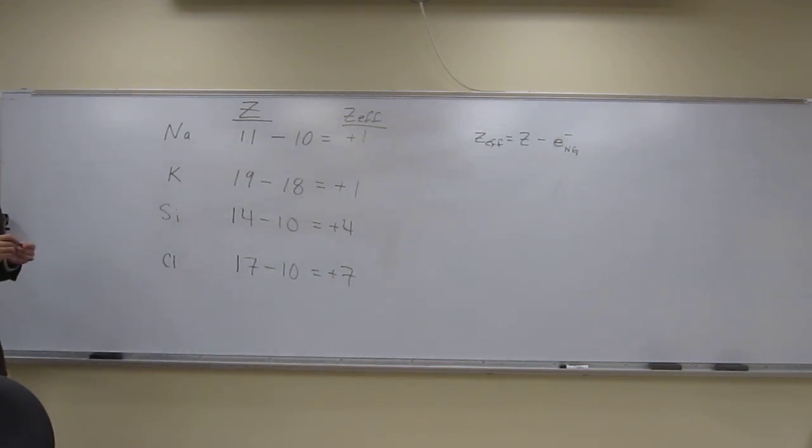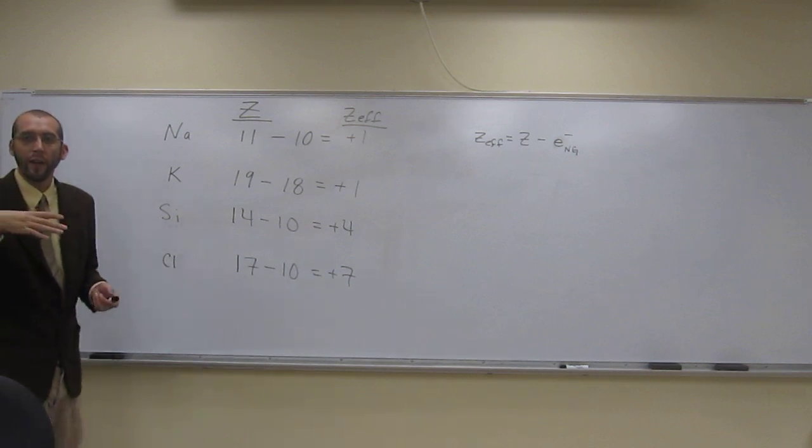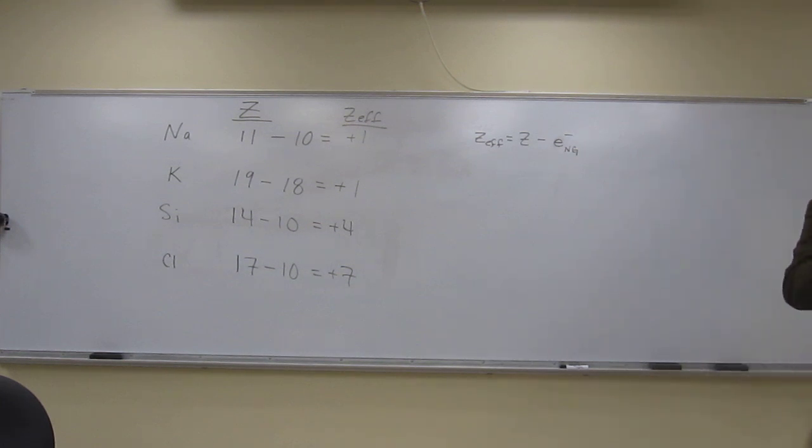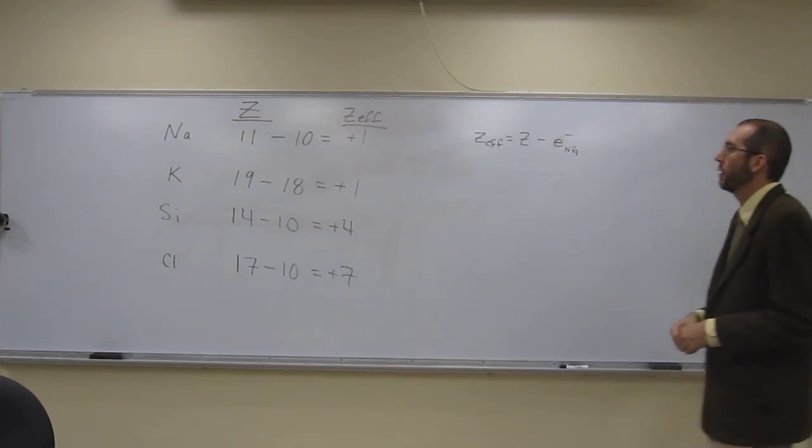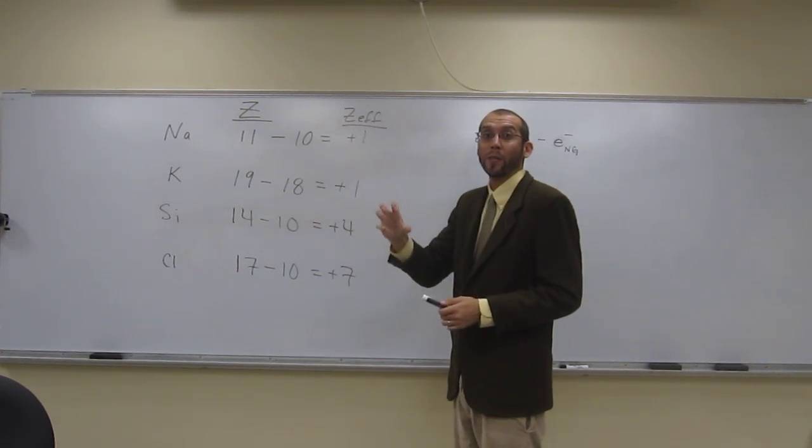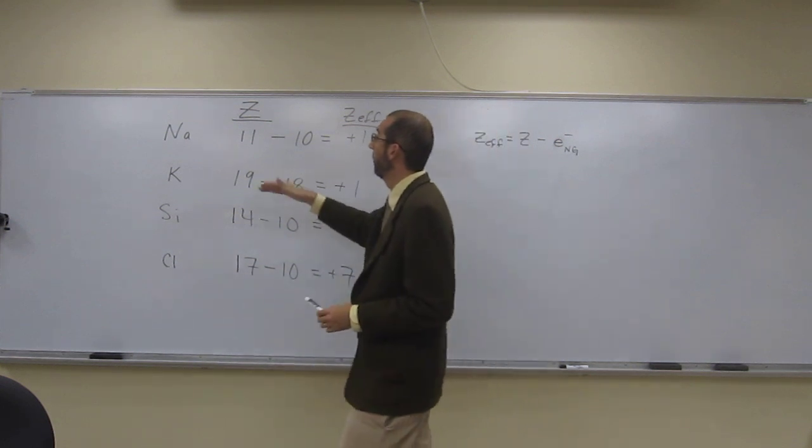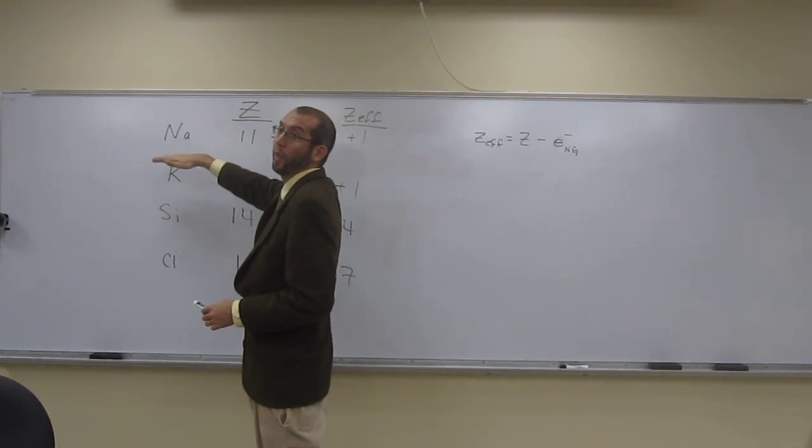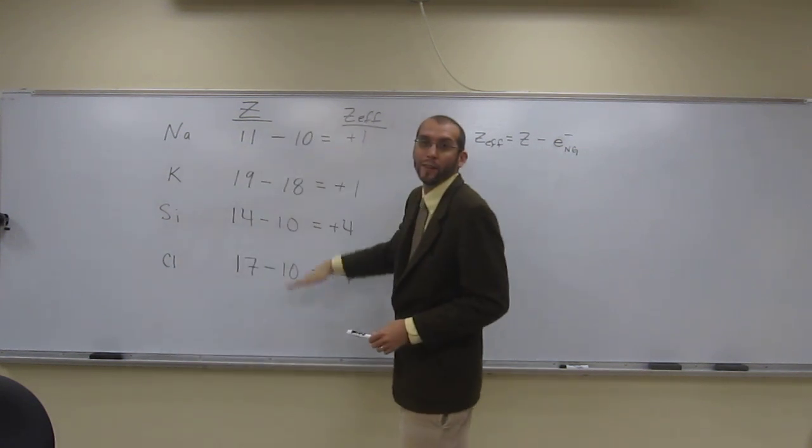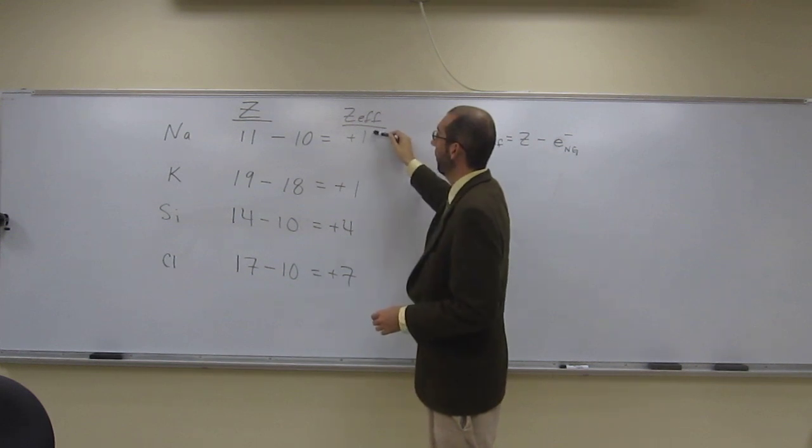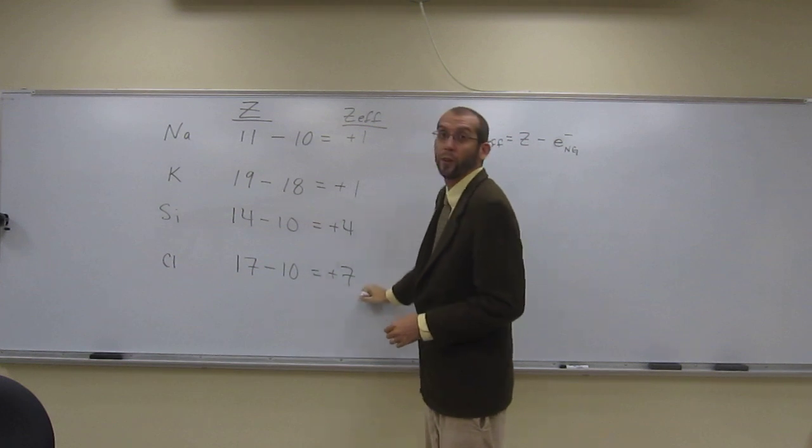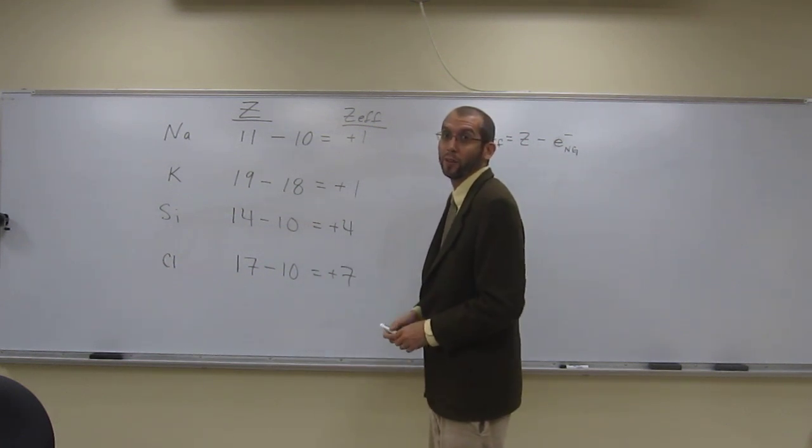So this Z effective kind of helps you identify or kind of think about that periodic trend about the size of the atoms themselves. So when you increase the Z effective as you go across the period, the atoms get smaller. So if you'll notice, if we wanted to put these in order of biggest to smallest, we'll say sodium, silicon, and chlorine, right? Because they're all in the same period. You'll see that sodium is the biggest because it's got the least effective nuclear charge. And chlorine's the smallest because it's got the most effective nuclear charge.